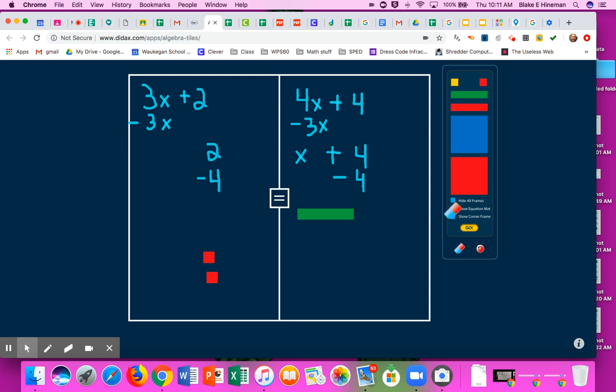And now I'm left with the situation that shows that over here, I have negative 2 equals x. So x equals negative 2 in this case.